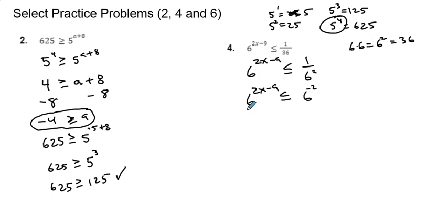Now I can recognize they're at the same base and drop them. 2x minus 9 is less than or equal to negative 2. So we will add 9 to both sides, and that's going to move this into a positive number that becomes 7. So 2x is less than or equal to 7. And then we will divide both sides by 2, and we get x is less than or equal to 7 halves.